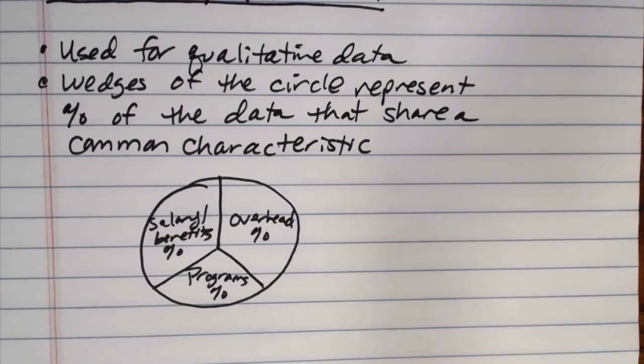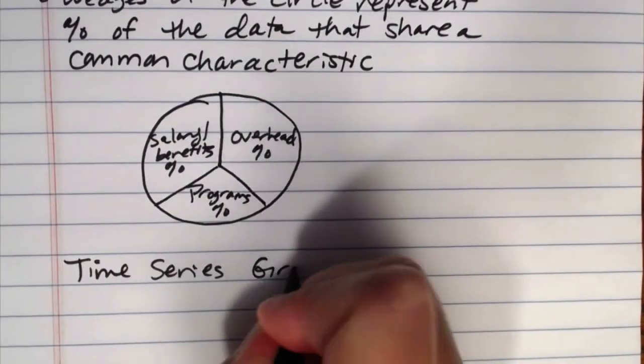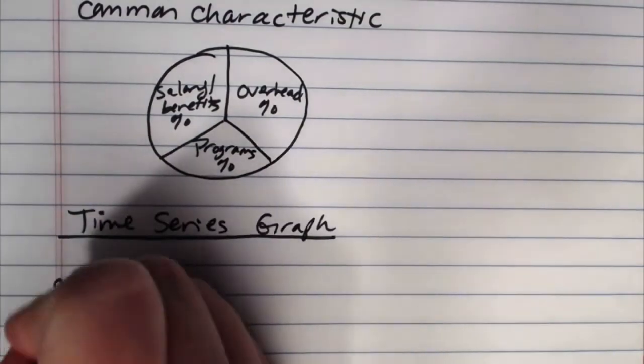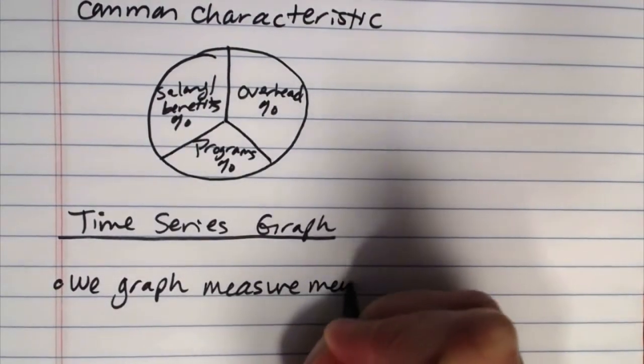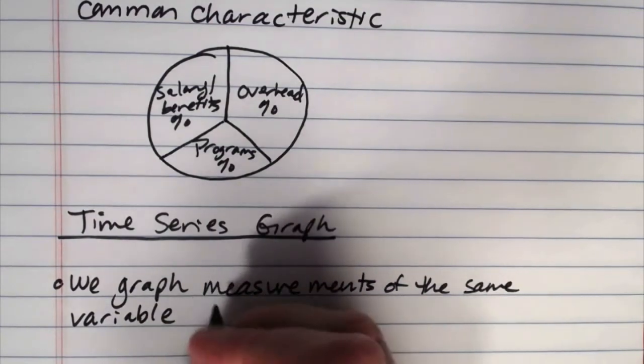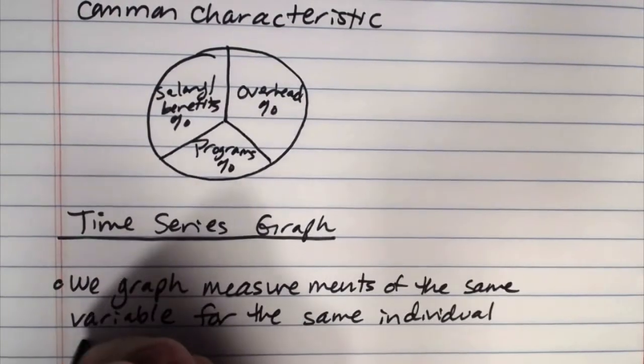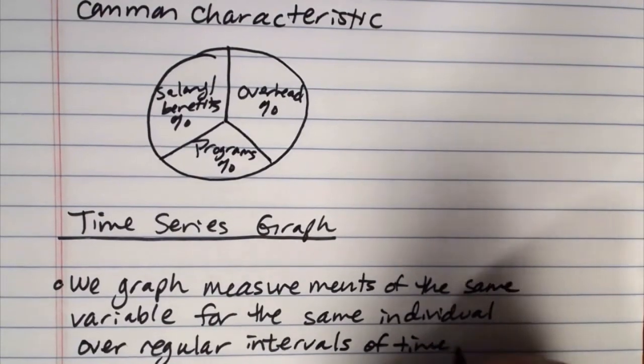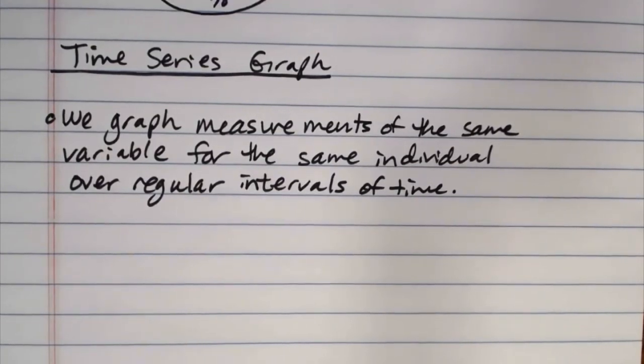And then the last main type of data display that's discussed in this section is the time series graph. In a time series graph we graph measurements of the same variable for the same individual over regular intervals of time.